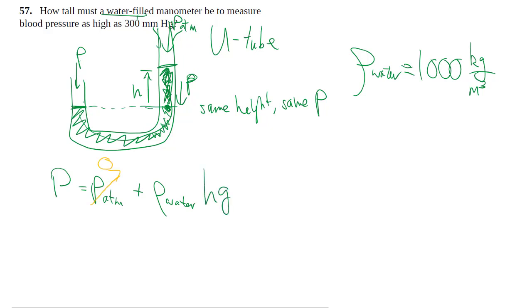we're again considering gauge pressure, so we'll set atmospheric pressure to be zero. Because what's being implied here is this 300 millimeter mercury is also 300 millimeter mercury more than atmospheric pressure, also expressed in gauge pressure.